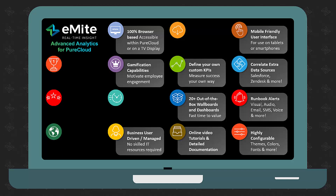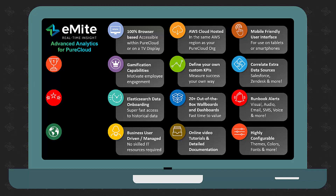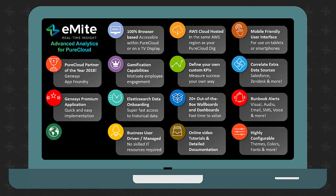There are runbook alerts for visual, audio, email, SMS, voice, and other alert types. It is built on Elasticsearch, which means super-fast access to historical data. It's in the same AWS region as your PureCloud org, so data stays in-region. And if you haven't heard, we won the PureCloud Partner of the Year award last year. We're also a Genesys Premium application, so it's very quick and easy to install Emite onto your PureCloud. And we have over 140 PureCloud deployments globally, so we are a proven solution.